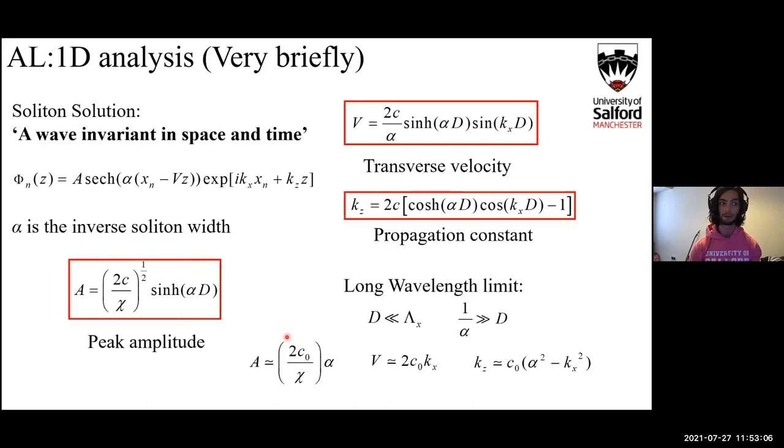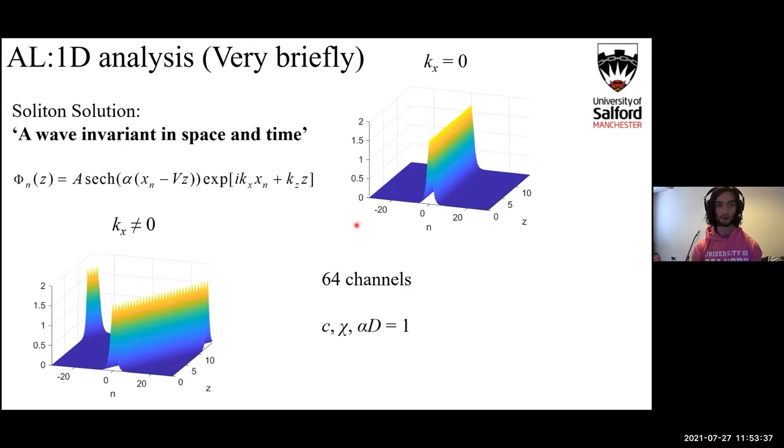Moving on to this idea of soliton solutions very briefly now, what is a soliton? Well, it's a wave that's essentially invariant in space and time provided that there's no external interference applied to it. Soliton solutions are thought to exist or expected to exist for the Ablowitz-Ladik due to it being integrable, which is why they don't exist for the dNLS. As can be seen here, if we look at the amplitude, transverse velocity, and propagation constant, these all agree in the long wavelength limit provided that this soliton width is much larger than channel spacing d. We can plot some very straightforward plane waves both on and off axis, and you can see it's pretty much invariant in space and time.